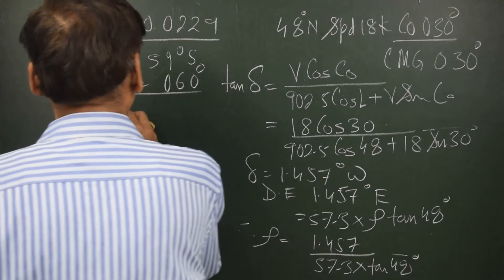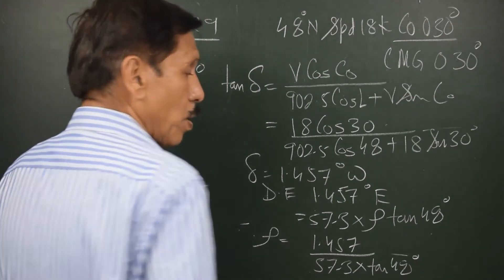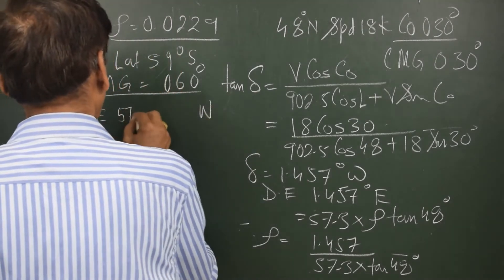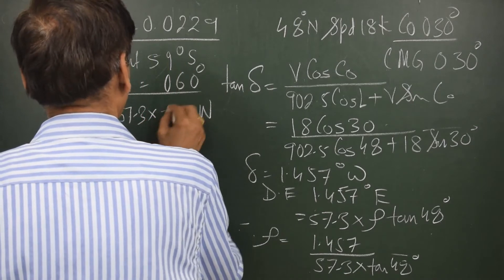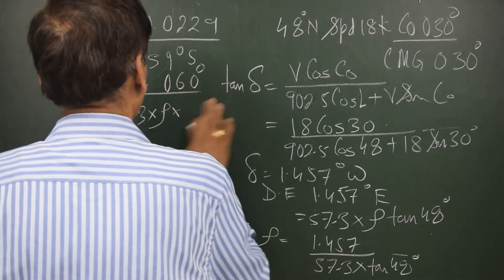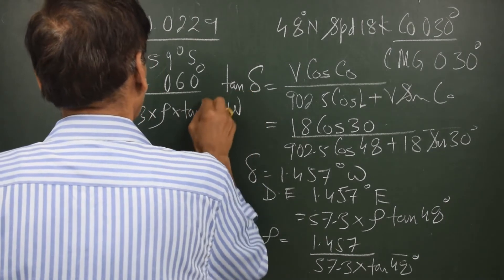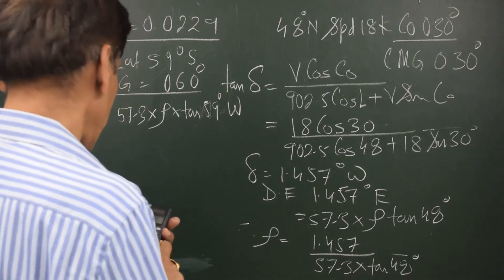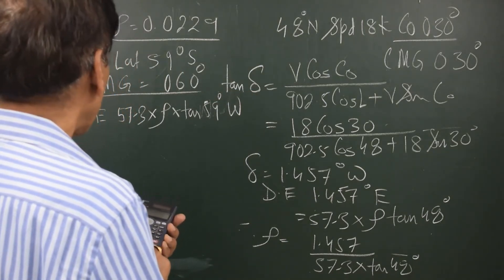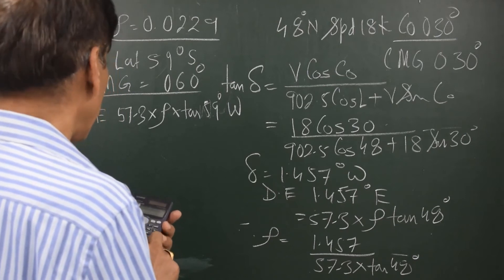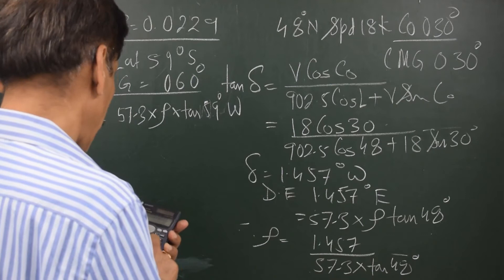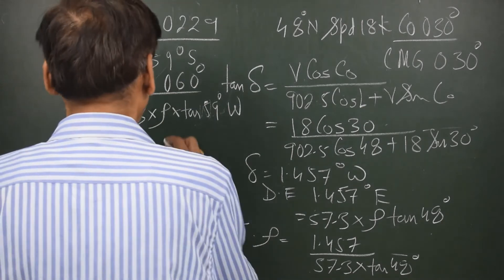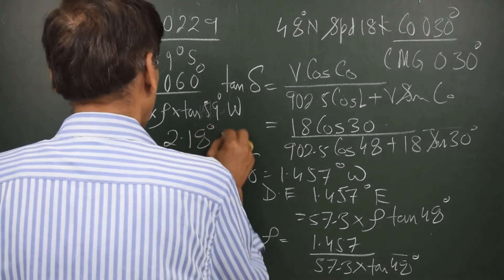Since the ship is in the southern hemisphere, the damping error will be westerly. Damping error equals 57.3 × ρ × tan(59°), which is 57.3 × 0.0229 × tan(59°) = 2.18 degrees westerly. This is the damping error.